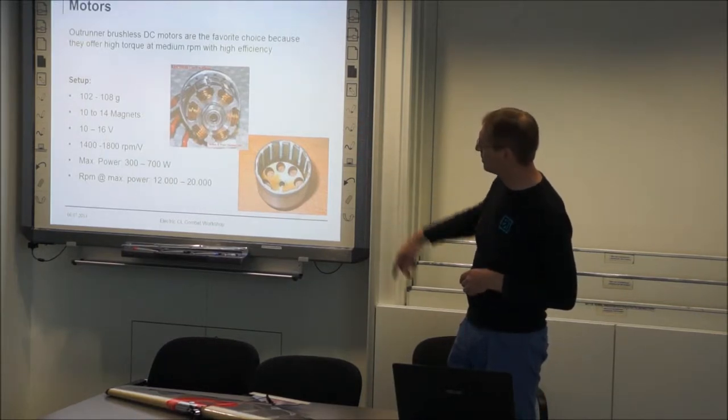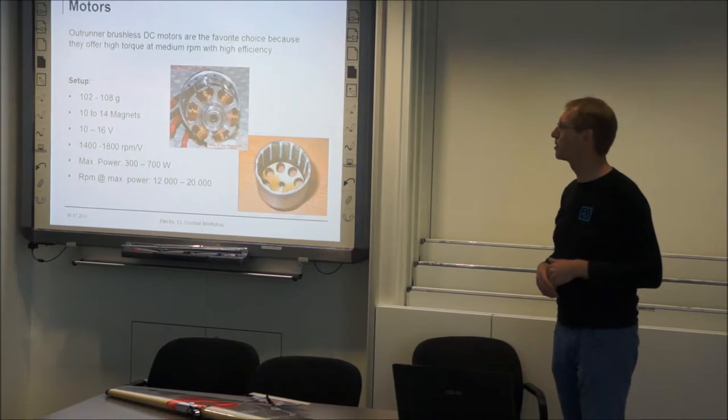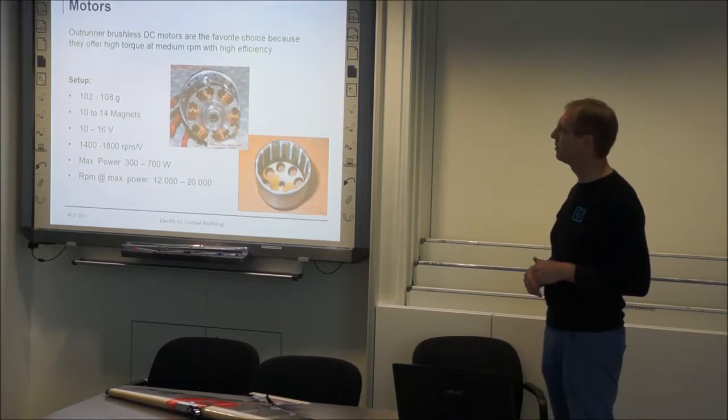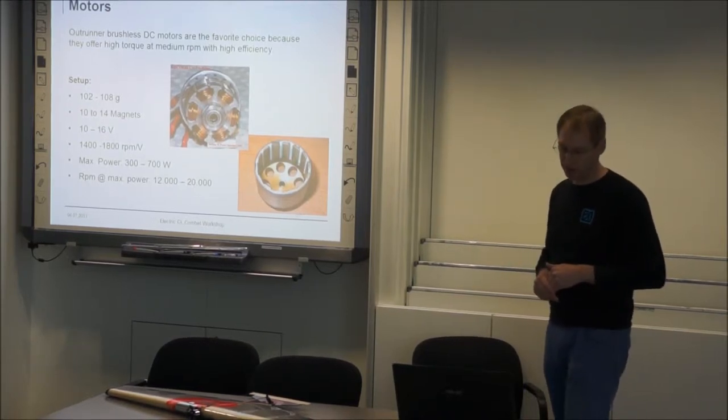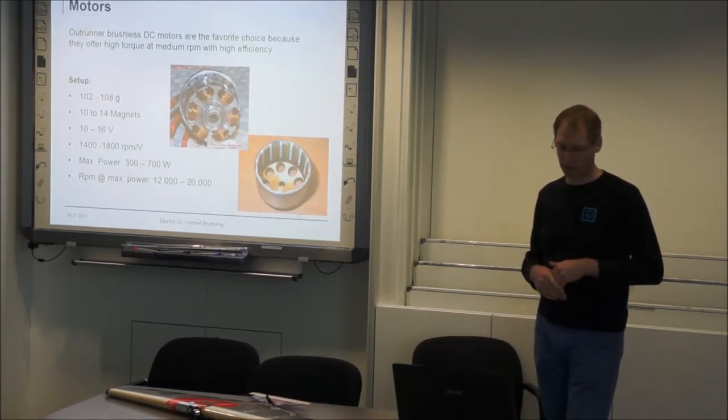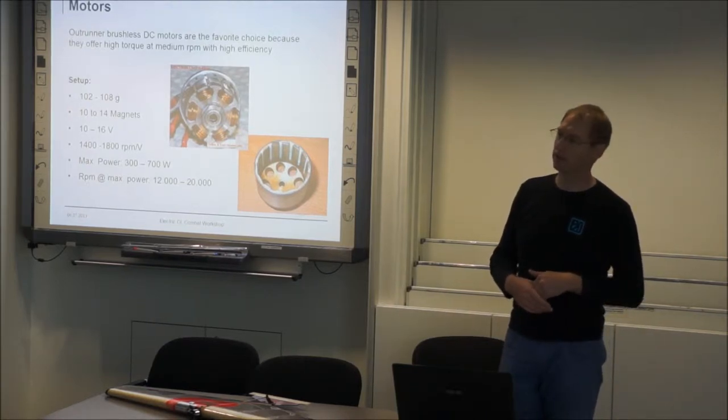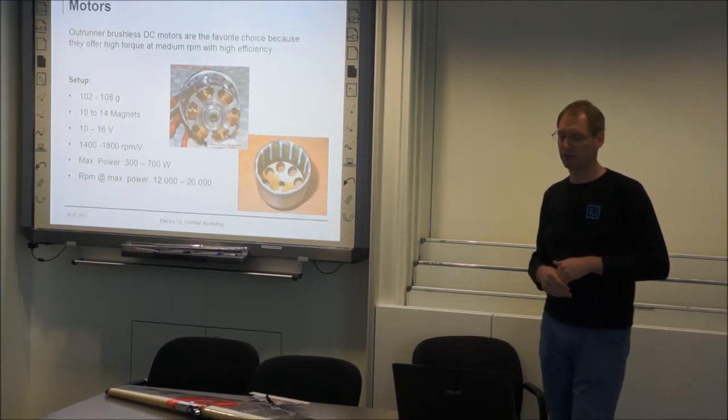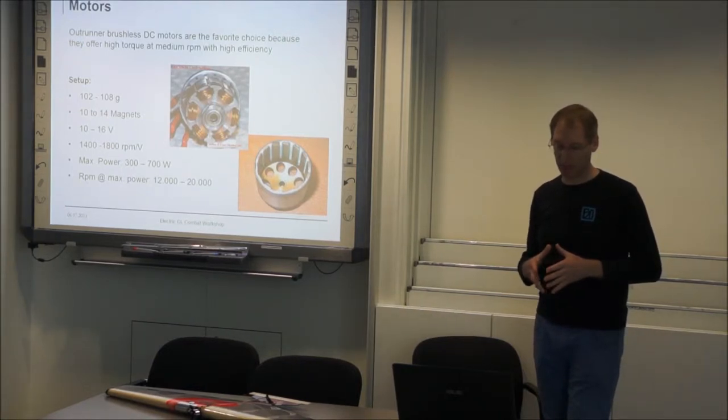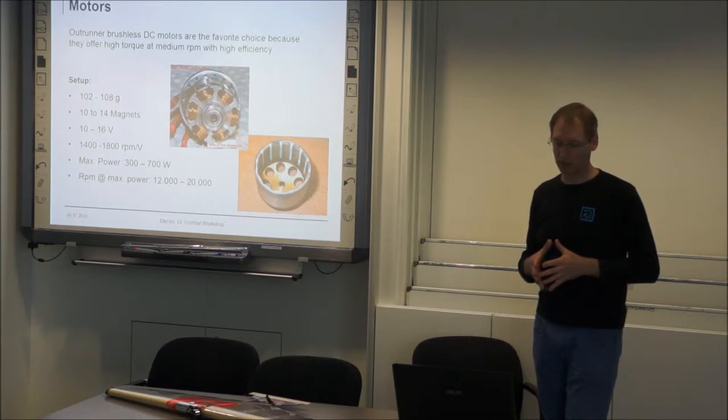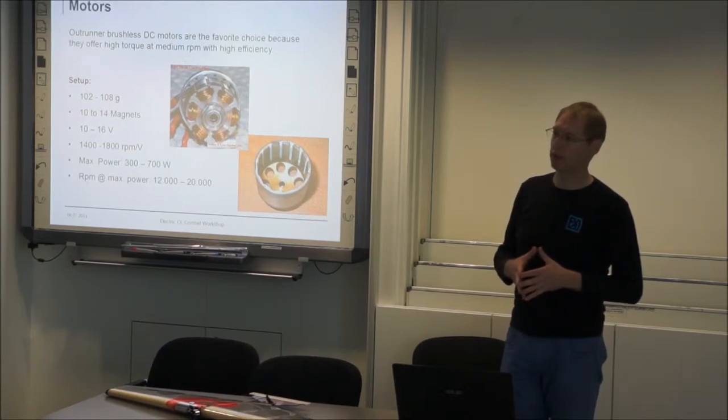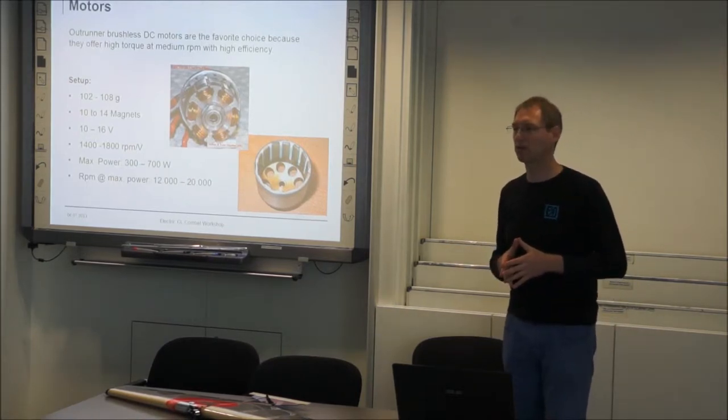We can buy the single components with special refining number. There are many motors we can buy with a certain, it is called KV number. It is RPM per volt. It is about 1400 to 1800 RPM per volt. It is a good range in my opinion. The maximum power from these motors is about 300 to 700 Watt. And the RPM range is 12000 to 20000. But 20000 starts to get loud.